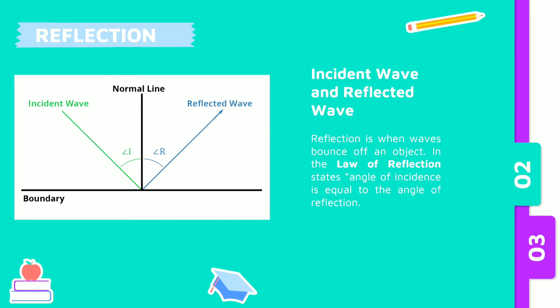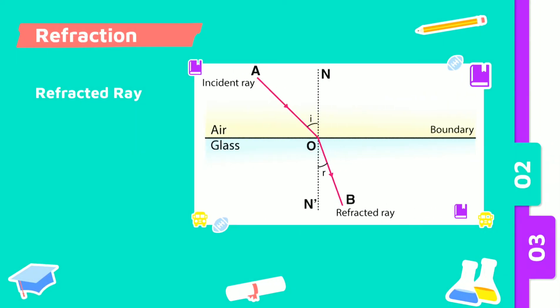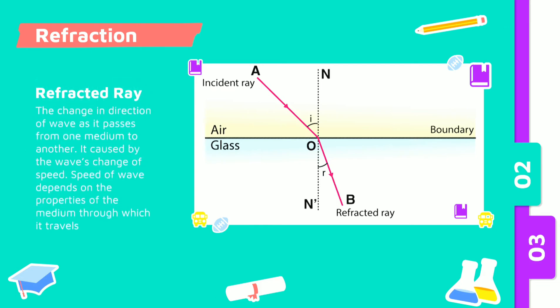We're moving to the next behavior, refraction. Refraction is the change in direction of a wave as it passes from one medium to another. Refraction is caused by the wave's change of speed. The speed of a wave depends on the properties of the medium through which it travels. For example, sound travels much faster through water than through air. When a wave enters at an angle a medium through which the speed would drop, the wave is bent toward the perpendicular.